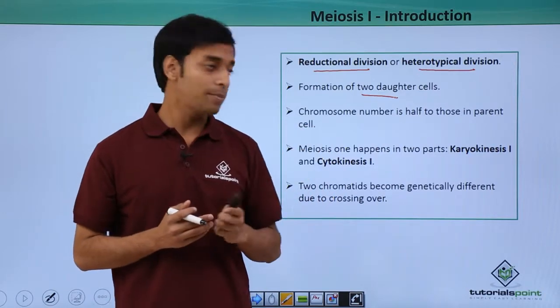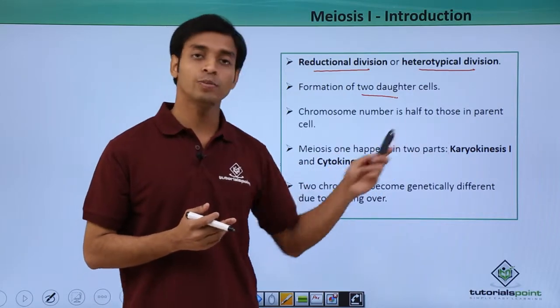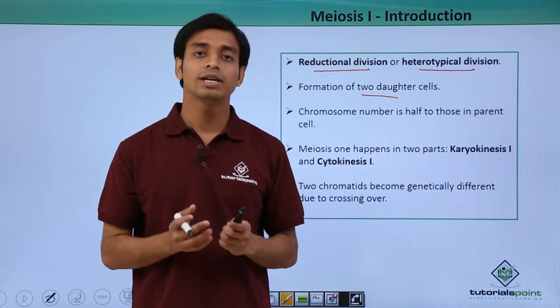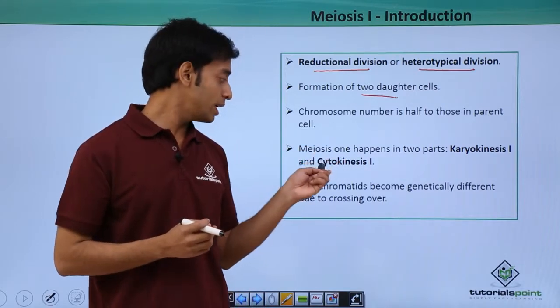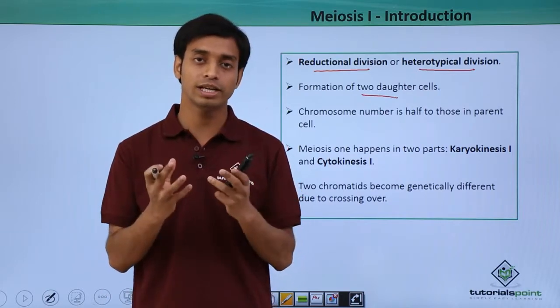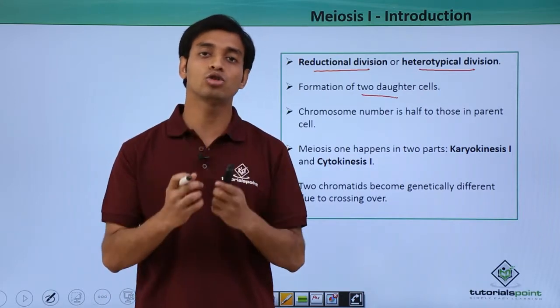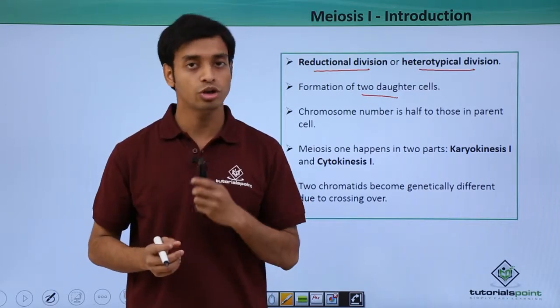Meiosis 1 happens in two parts: karyokinesis 1 and cytokinesis 1. In karyokinesis 1, the nucleus divides into two different nuclei. In cytokinesis 1, the cytoplasm or protoplasm of the cell divides, resulting in the formation of two new daughter cells.